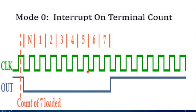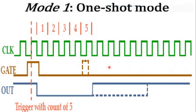In this diagram, the count value is 7. Initially the output is high. Once the count value is loaded into the counter register, the next clock pulse starts the decrement operation, and the output goes low. When the counter reaches 0, the output goes high again. This mode can be used to interrupt the microprocessor.